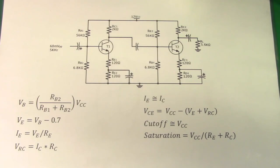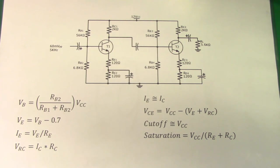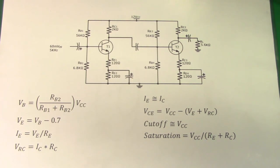We've covered all of the transistor configurations: the common base, the common collector, and the common emitter. Now it's time to start putting multiple stages of these transistors together and improving them to get more gain out of them, either voltage or current.